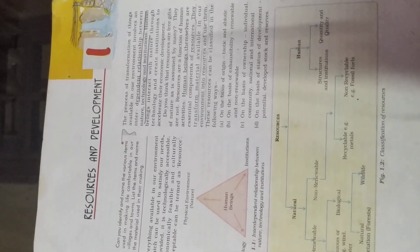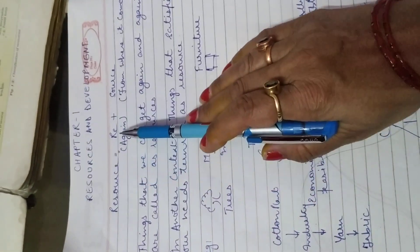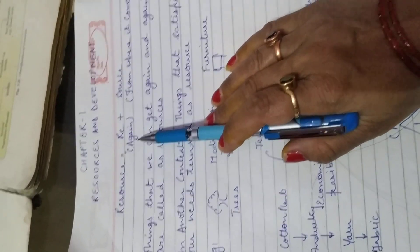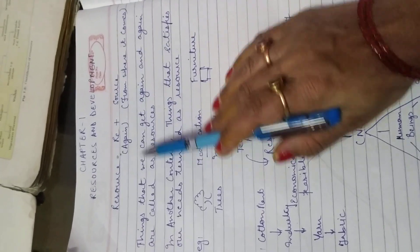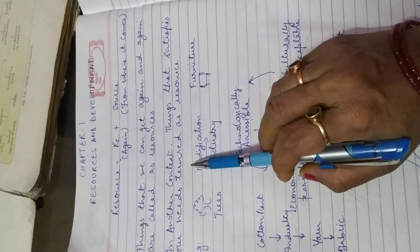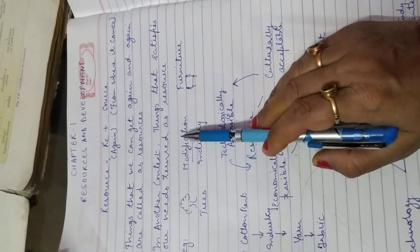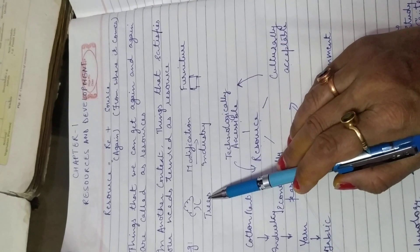Let us begin with the first chapter of class 10th, that is Resources and Development. The word 'resource' has been derived from two words: 're' plus 'source'. 'Re' means again and 'source' means from where it comes. That is, the things that we can get again and again are called resources. In another context, things that satisfy our needs are termed as resources. Example: trees.